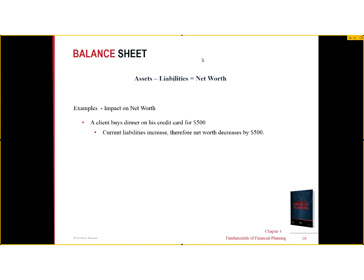A client buys dinner on his credit card. Immediately, the client has $500 worth of food, but then the food gets consumed. So immediately, my credit card liability went up by $500 and my assets went up by $500. But then I consume the food and my assets go down. Net, all that's happened is I have an increase in my liabilities — therefore a decrease in my net worth by $500.